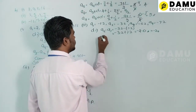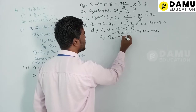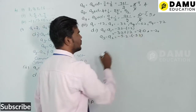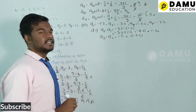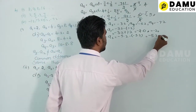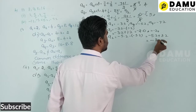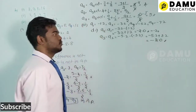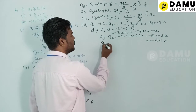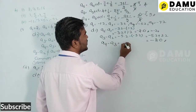Then a3 − a2 = −5.2 − (−3.2) = −5.2 + 3.2 = −2.0. The common difference is again −2.